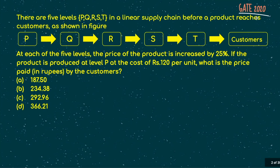The first question was asked in the GATE 2020 exam. It says there are five levels P, Q, R, S, T in a linear supply chain before a product reaches the customer, as shown in the figure. At each of the five levels the price of the product is increased by 25 percent. If the product is produced at level P at a cost of 120 rupees, what is the price paid by the customer?